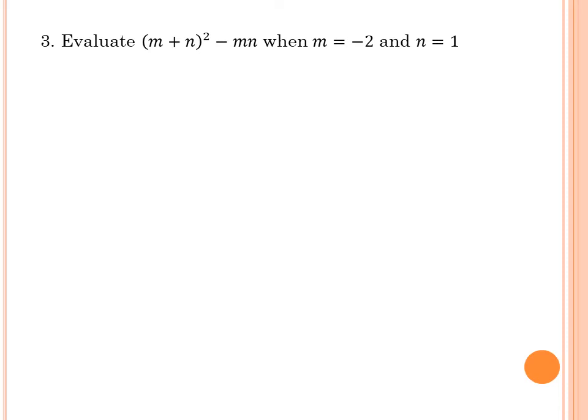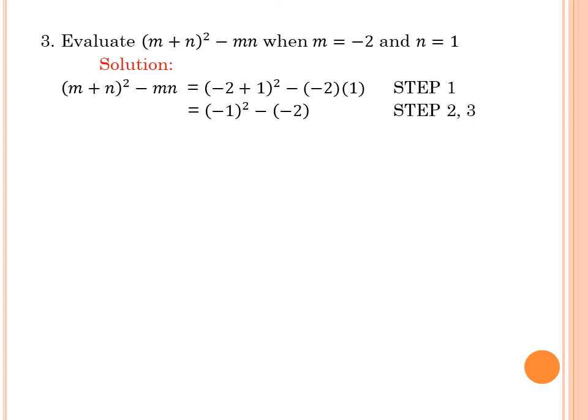Number 3: Evaluate the quantity of m plus n squared minus mn when m is equal to negative 2 and n is equal to 1. Solution: Substitute the value of m and n. We have the quantity of negative 2 plus 1 squared minus negative 2 times 1 for step 1. And simplify negative 2 plus 1, which is equal to negative 1 squared minus negative 2, step 2 and 3. And it would be equal to 1 plus 2 for step 4. And 1 plus 2 is equal to 3, the final answer.